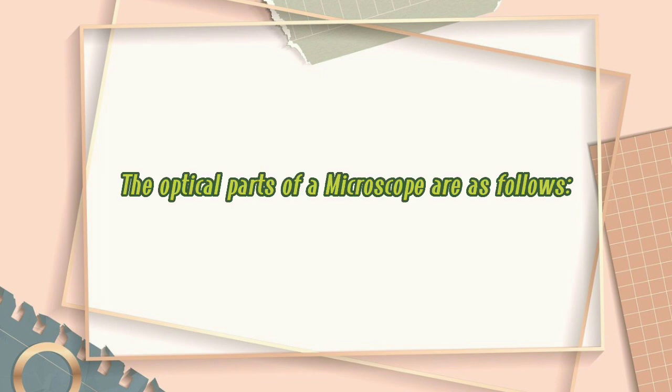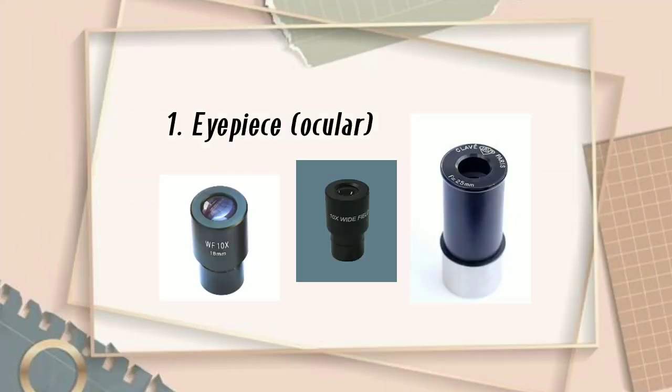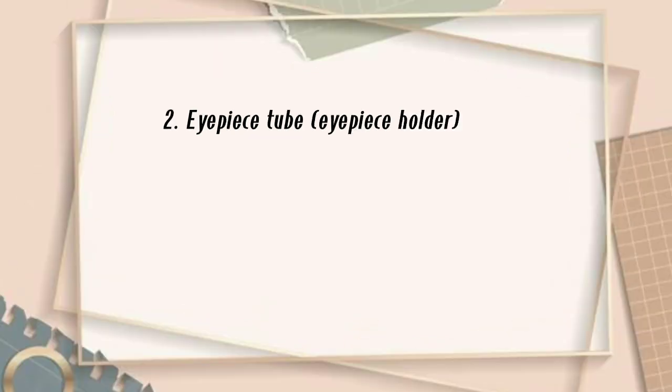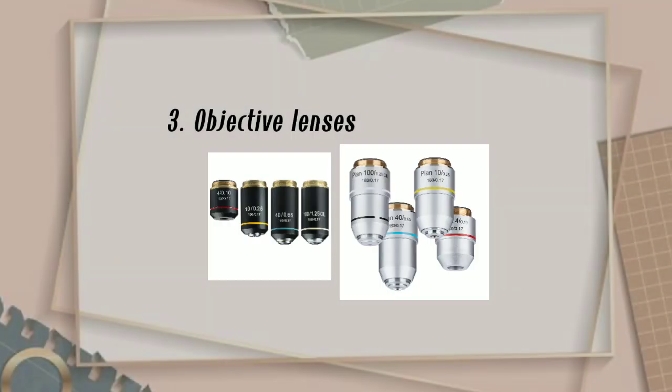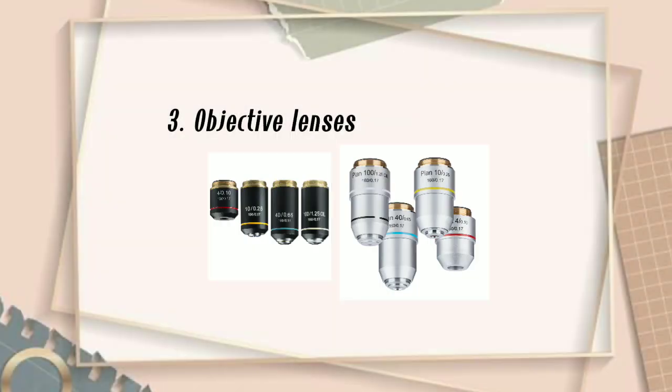The optical parts of the microscope are as follows. Eyepiece, or ocular — it is the part of the microscope that magnifies the image produced by the microscope objectives. Eyepiece tube, or eyepiece holder — it separates the objective and the eyepiece, and ensures continuous alignment with the objects.